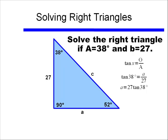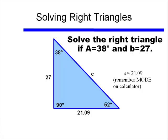38 degrees is not one of our special triangles, it's not 30, 60, or 45 degrees. So we're going to use our calculator and find that length A is approximately equal to 21.09. Please remember to use the correct mode on your calculator. If you're in radian measure, you will get the wrong answer.